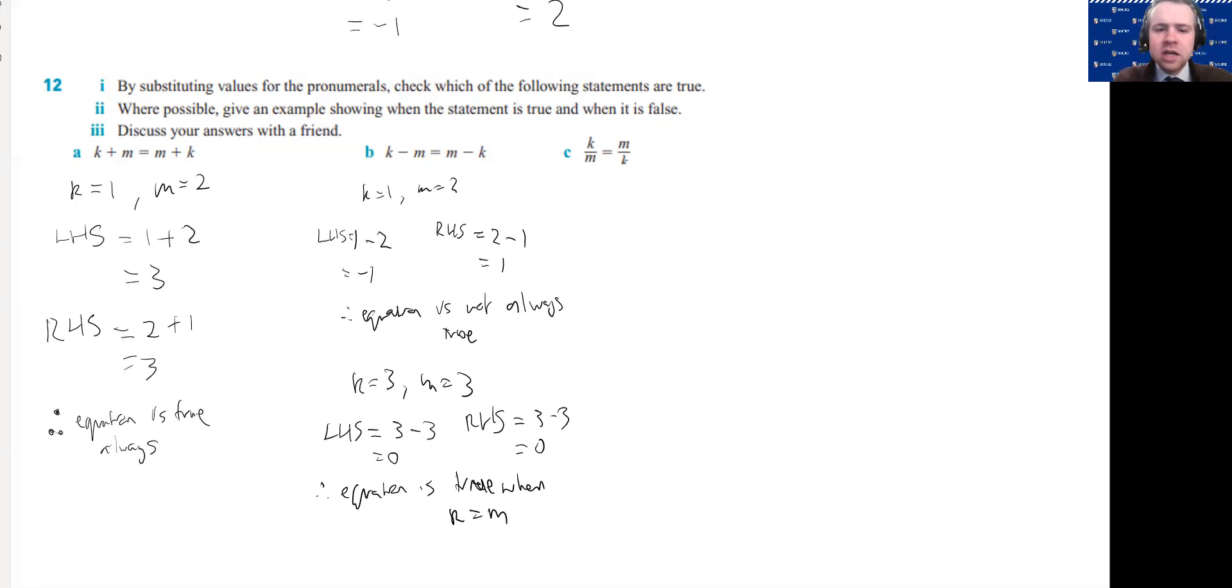For c, we're going to get a similar thing here. So if I let k equal 1 and m equal 2, the left hand side is going to be 1 over 2. And the right hand side is going to be 2 over 1, which is just 2. So equation is not true.